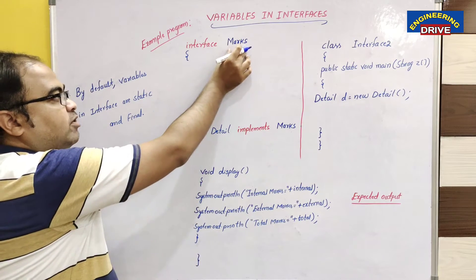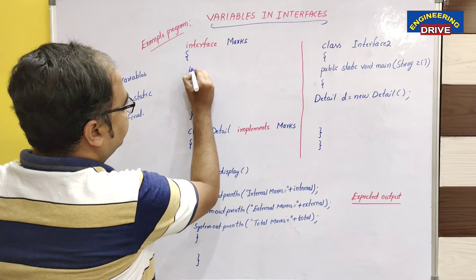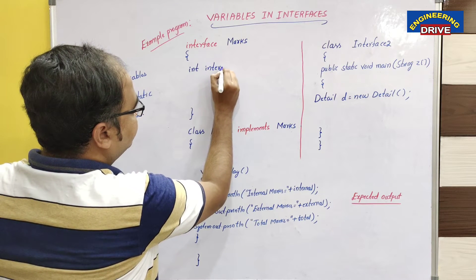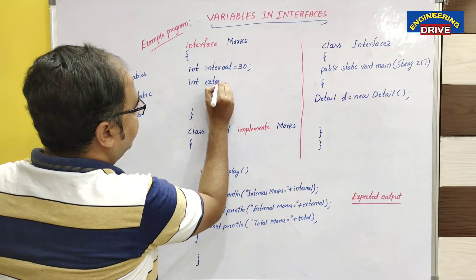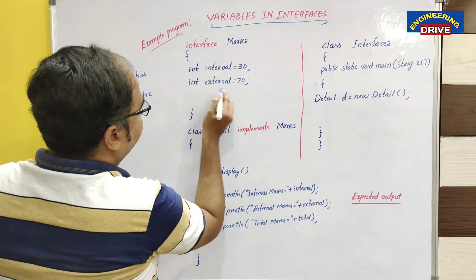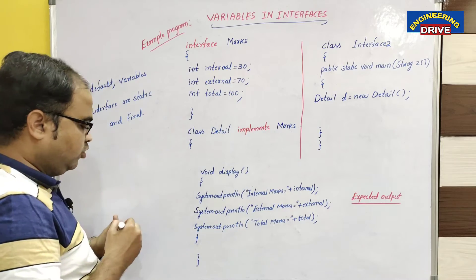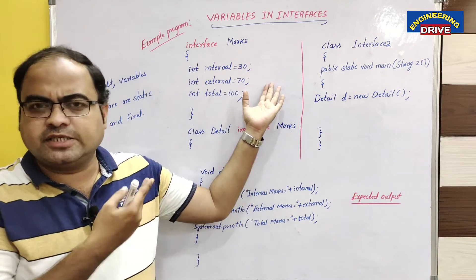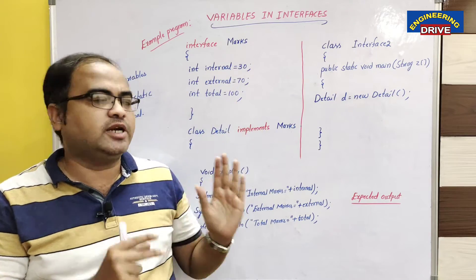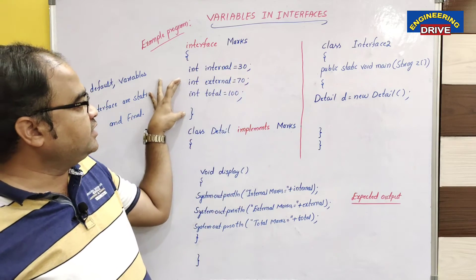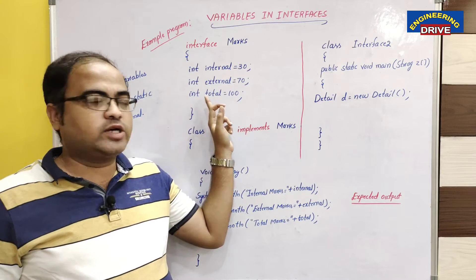I will show you the meaning of final with this example program. This is an interface and its name is 'marks'. In this interface I want to declare three variables: int internal is equal to 30, int external is equal to 70, int total is equal to 100. I have not declared any abstract methods in this interface because how to use methods I have already shown in my previous class. This is only to show you the use and nature of variables in interfaces. These are the three variables I have declared in this interface 'marks'.